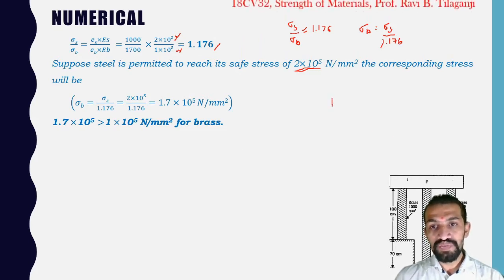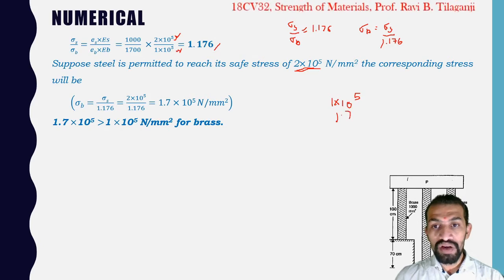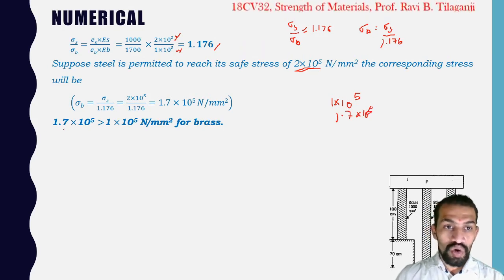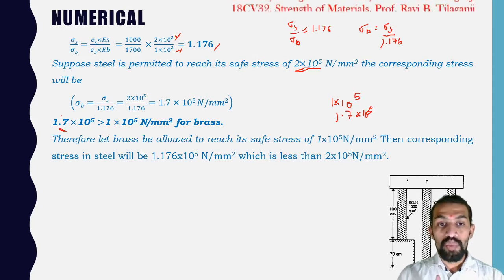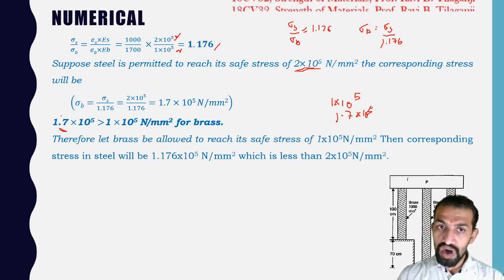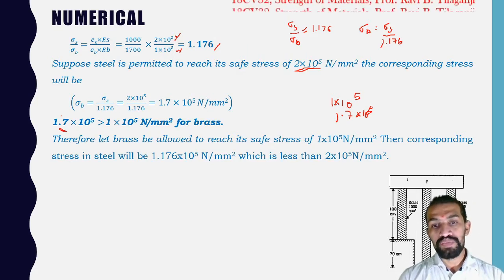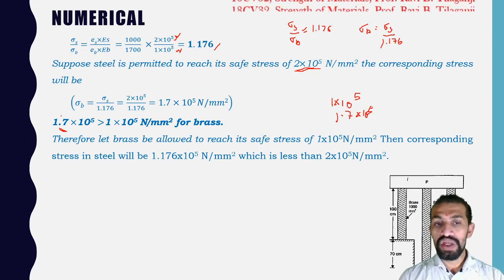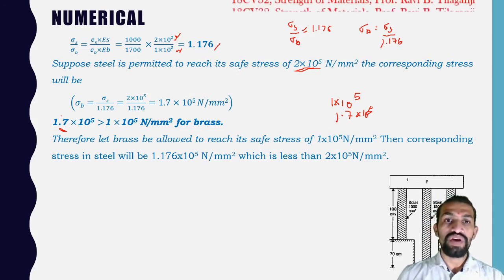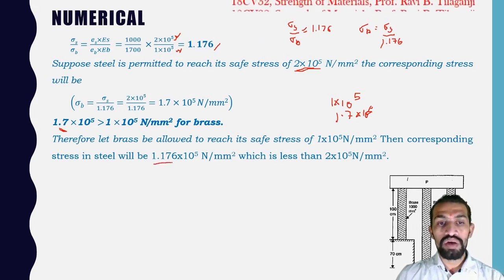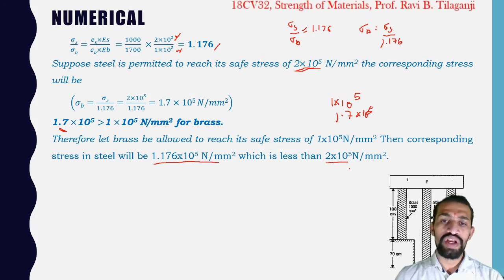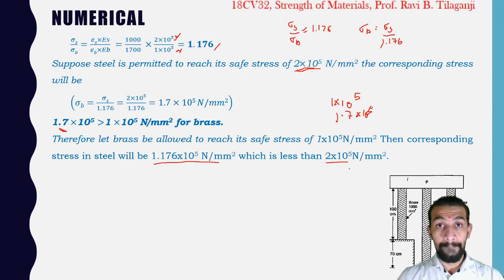Since the computed brass stress exceeds its allowable, we must let brass reach its safe stress of 1 × 10⁵ N/mm² instead. The corresponding steel stress = 1.176 × 10⁵ N/mm², which is less than its allowable 2 × 10⁵ N/mm². Therefore brass governs.